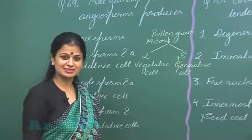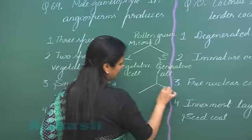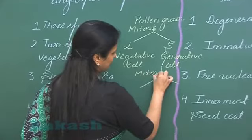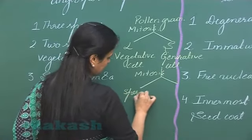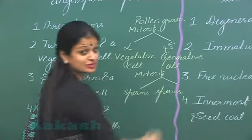Now the smaller size cell, that is the generative cell, it further undergoes mitosis. After mitosis, there is formation of non-motile male gametes, that is sperms.